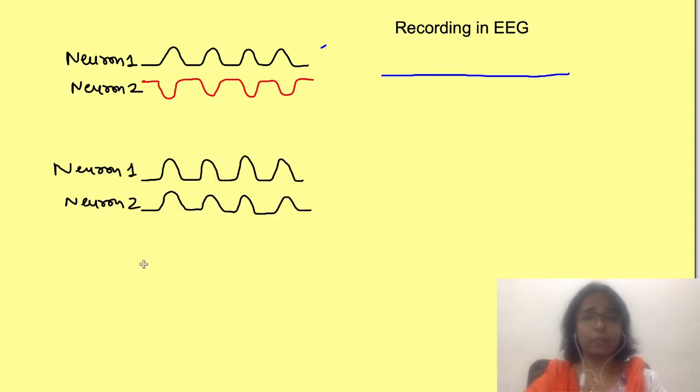In this example there are simultaneous EPSPs in two post-synaptic neurons, or synchronized activation. There is adding up of activity causing increased amplitude.